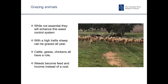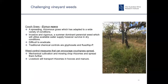Grazing animals has become very popular in recent years. 32% of vineyards surveyed through Sustainable Wine Australia have shown that sheep are being used during winter for weed control. However, livestock, while effective for many weeds, can actually help spread some weeds, including challenging weeds such as couch grass and kikuyu grass. Unfortunately, there are very few organic options available for controlling these grasses, and the best way to get on top of them is probably just to use chemicals at this stage, as they will grow through mulches quite readily as well. I recommend you don't use mechanical cultivation, as mowing and cultivation will spread the rhizomes.